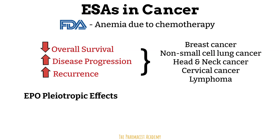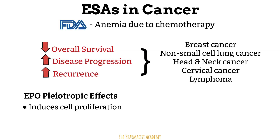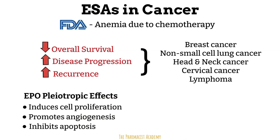Pleiotropic effects, by definition, is when a substance has effects other than its main known effect. Erythropoietin has effects beyond stimulating red blood cell production due to high levels of EPO receptors found on many different cell types. These pleiotropic effects may be the reason why ESAs lead to negative outcomes in certain cancers. They include inducing cell proliferation or promoting cell division — making the tumor stronger — promoting angiogenesis or formation of blood vessels to feed the tumor with nutrients and oxygen, and inhibiting apoptosis, meaning no cell death occurs.